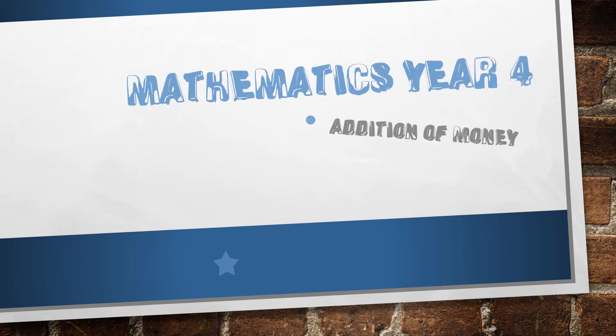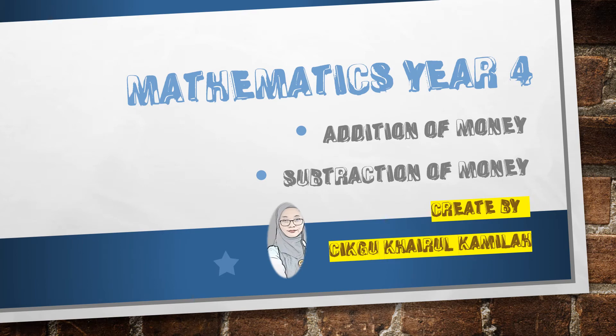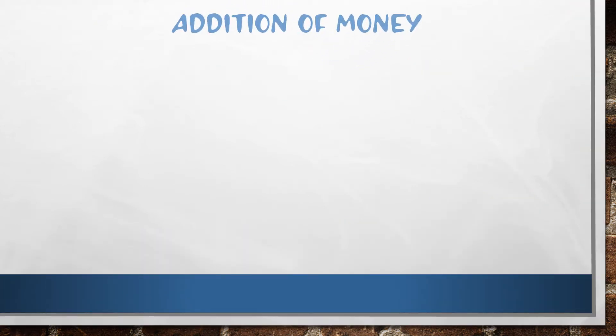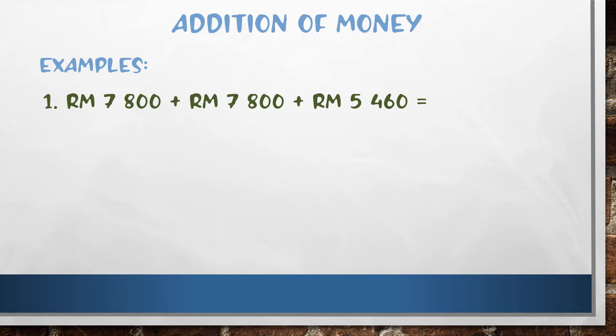Hello, good morning. Today we learn about addition of money and subtraction of money. We go to the topic: addition of money examples. Example one — the numbers are seven thousand eight hundred ringgit, plus five thousand four hundred and sixty ringgit.